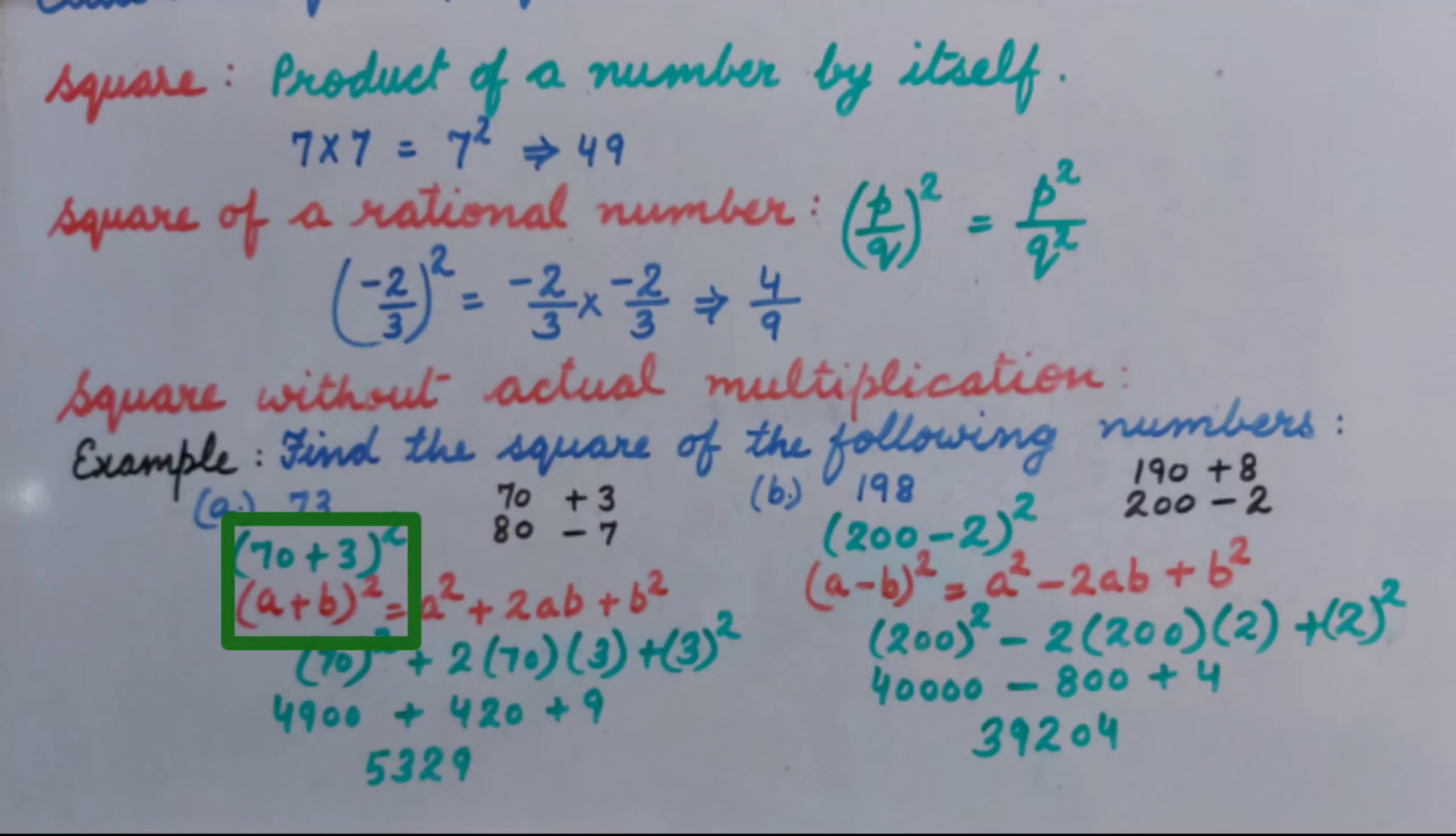Where A plus B denotes 70 plus 3, so value of A is 70, value of B is 3. Inserting the values of A and B in right side, we get 70 square plus 2 multiplied by 70 multiplied by 3 plus 3 square.